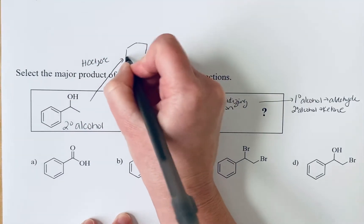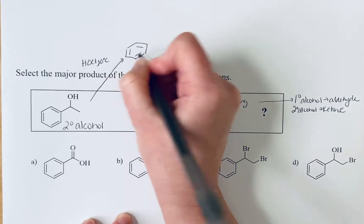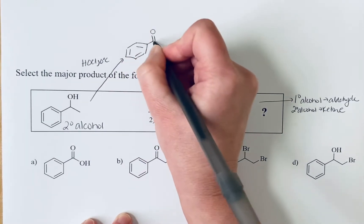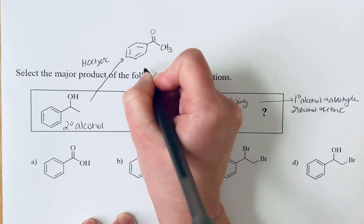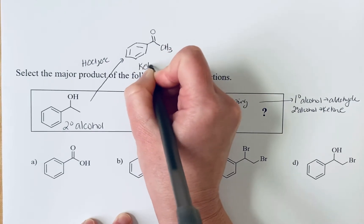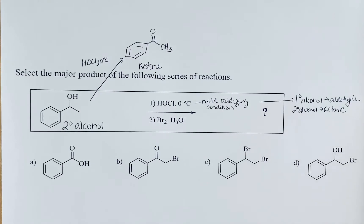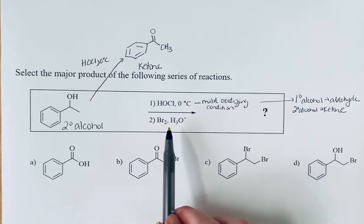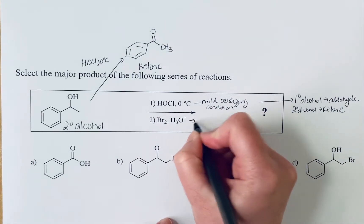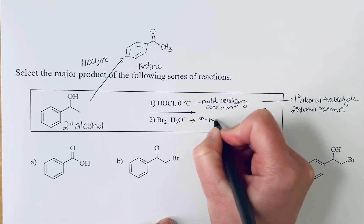Once we've made this ketone the next step is we are adding molecular bromine and an aqueous acid solution. This is alpha halogenation conditions.